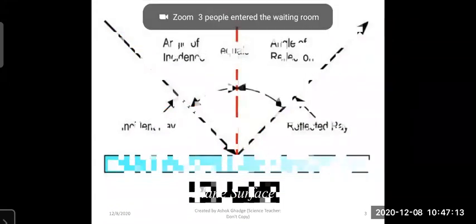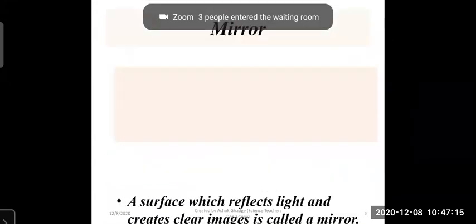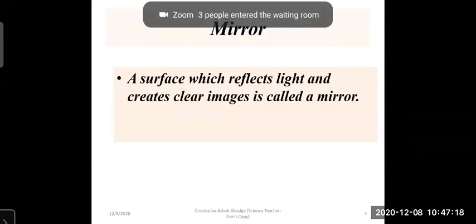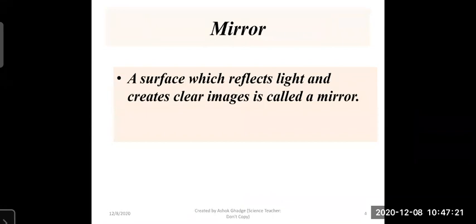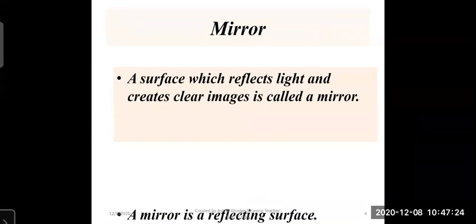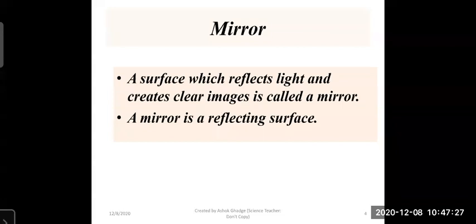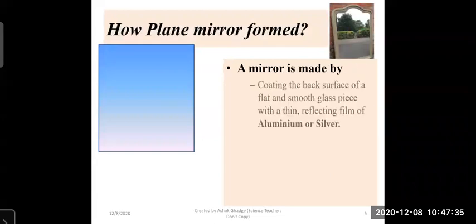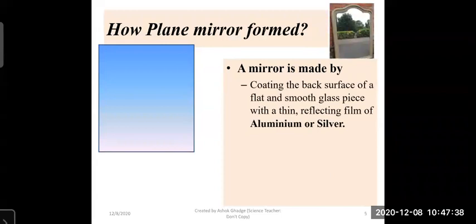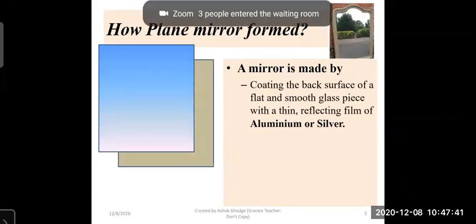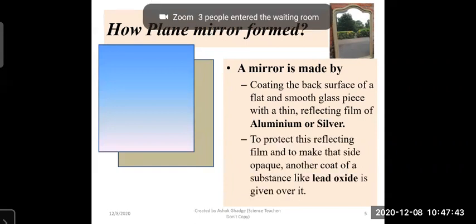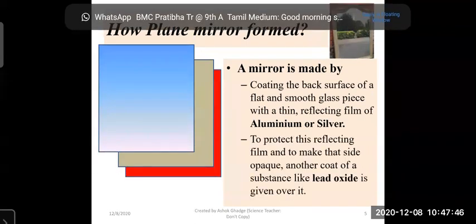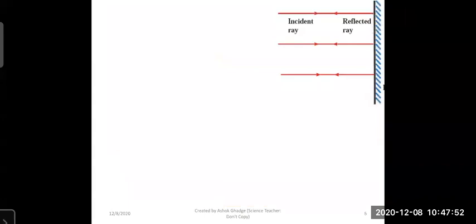The reflecting surface is a mirror. A mirror is a surface which reflects light and creates a clear image. If we take a plane glass and coat its back with aluminum or silver, and then apply lead oxide for protection, it will give 100% reflection from that mirror.